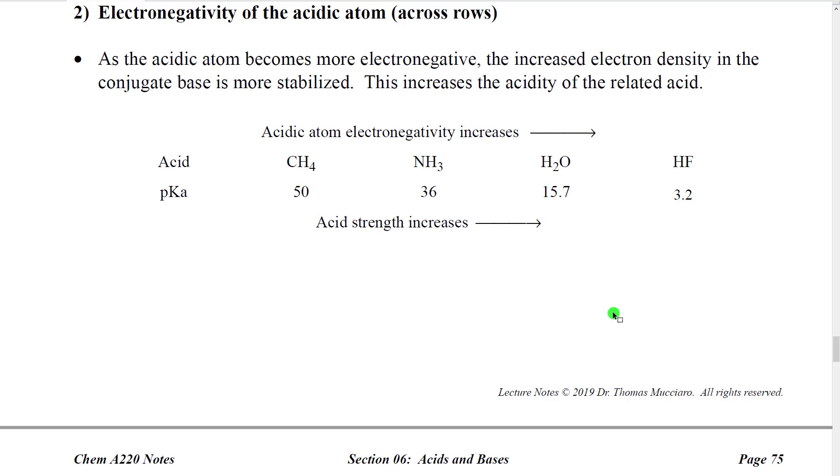We can also look at atoms across a row. And when we look at that, we can see that across a row, as we go from carbon, to the right, to nitrogen, again to oxygen, again to fluorine, we can see that the electronegativity is increasing. In this case, what we see is that, as the electronegativity increases, but the size stays relatively similar,